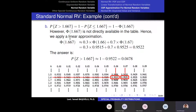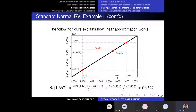I need to identify the probability at 1.667. I have the cumulative probability at 1.66 and at 1.67, but not for 1.667. So I am going to apply a linear approximation. The CDF function is equal to 0.9515 at 1.66, and I know that it is equal to 0.9525 at 1.67.